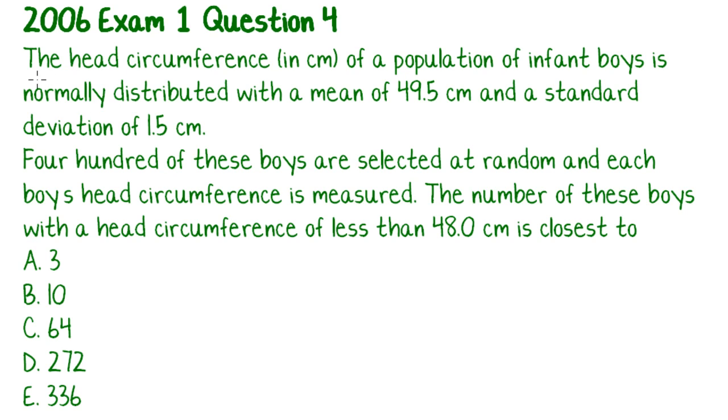And the question says, the head circumference in centimetres of a population of infant boys is normally distributed with a mean of 49.5 and a standard deviation of 1.5. This sounds freakishly familiar to last year's question or the next year's question. I think they're rehashing their own material. But anyway, 400 of these boys are selected at random and each boy's head circumference is measured. Okay. The number of these boys with a head circumference of less than 48 centimetres is closest to.